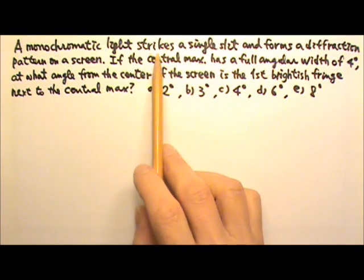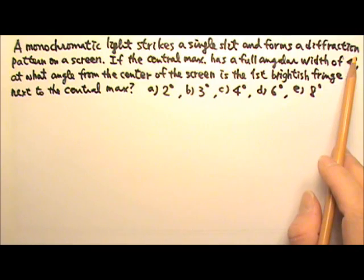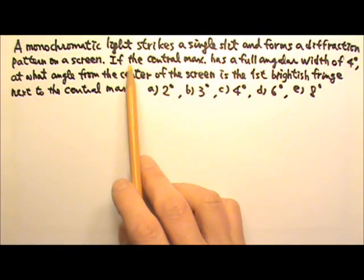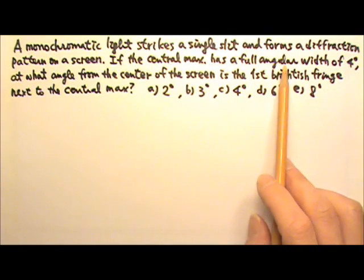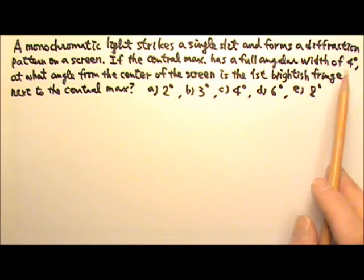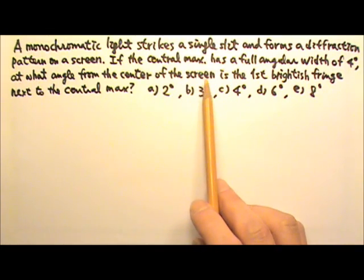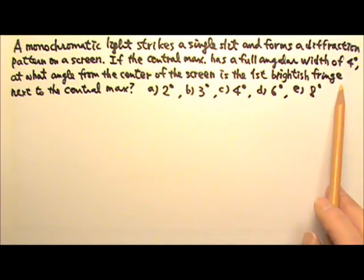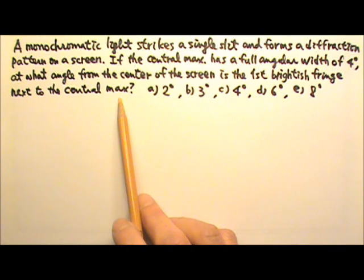A monochromatic light strikes a single slit and forms a diffraction pattern on a screen. If the central maximum has a full angular width of 4 degrees, at what angle from the center of the screen is the first brightish fringe next to the central maximum?